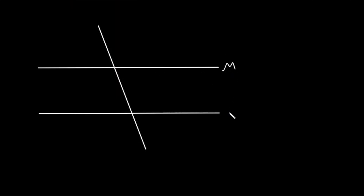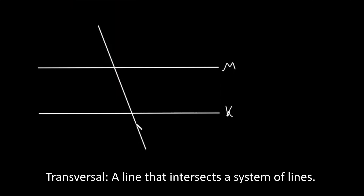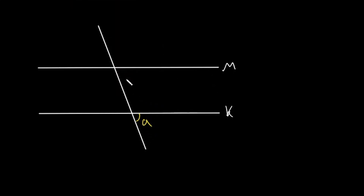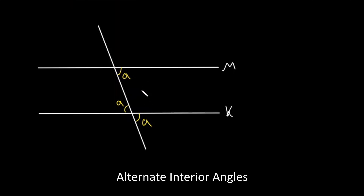These two lines, let's call them M and K, are parallel. This third line crosses both parallel lines, so we call it a transversal. Let's say we have an angle here — let's call that A. Because these two lines are parallel, A is going to correspond with this angle here, so this angle will also be A. If we look at angle A here and this angle, these two angles are equal and they are alternate interior angles — they're both on the inside of the two parallel lines and they alternate sides of the transversal.